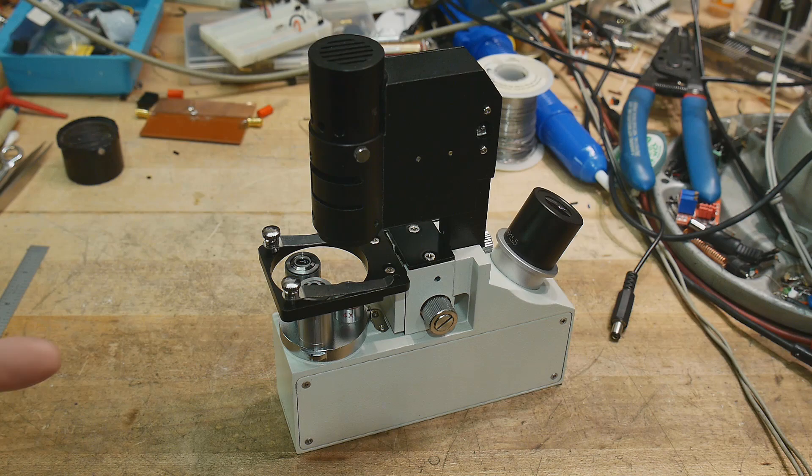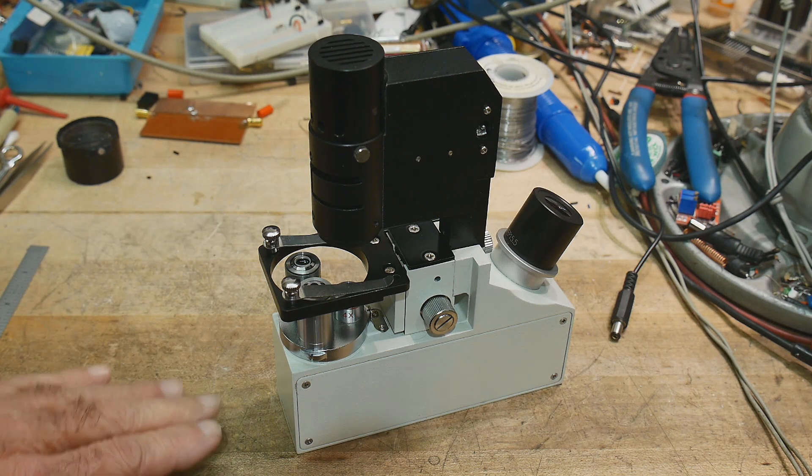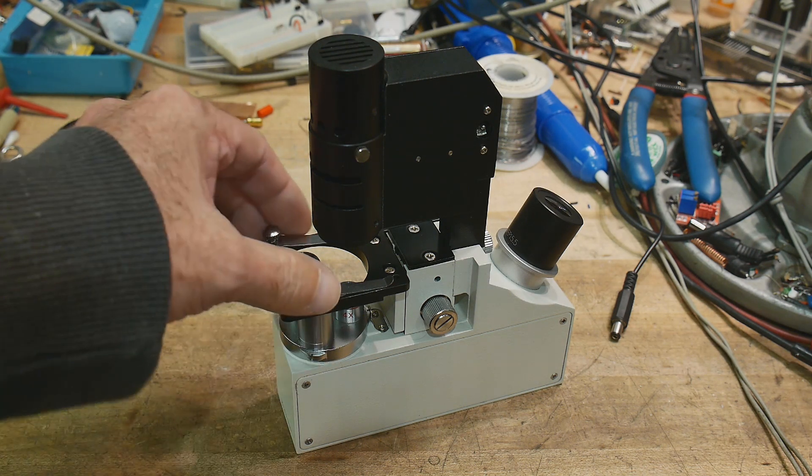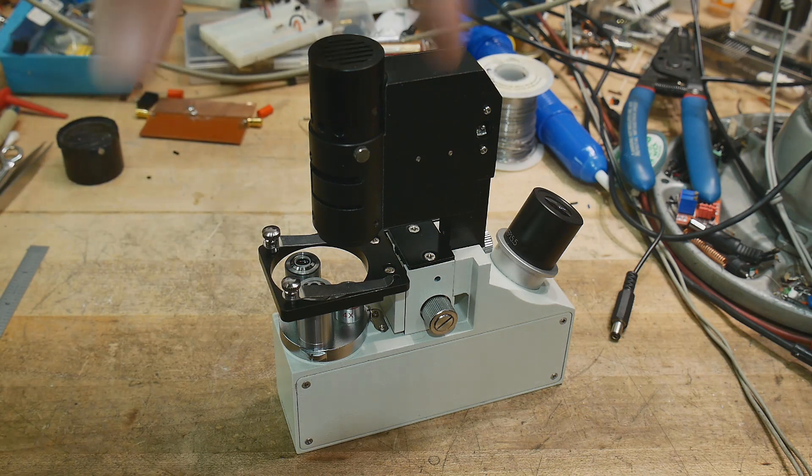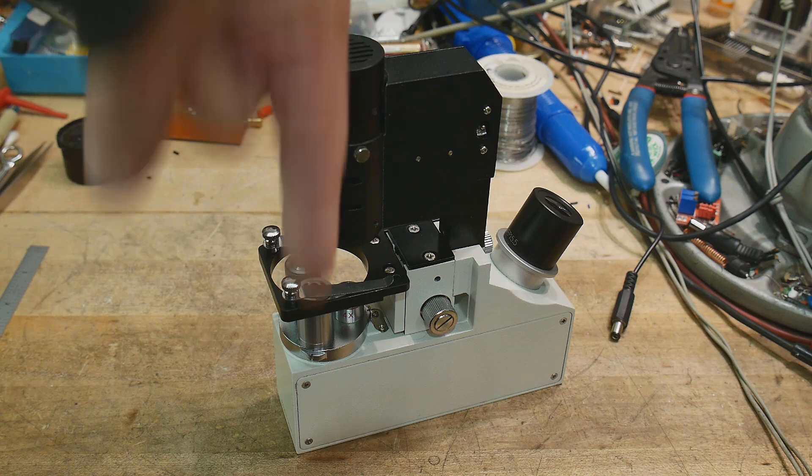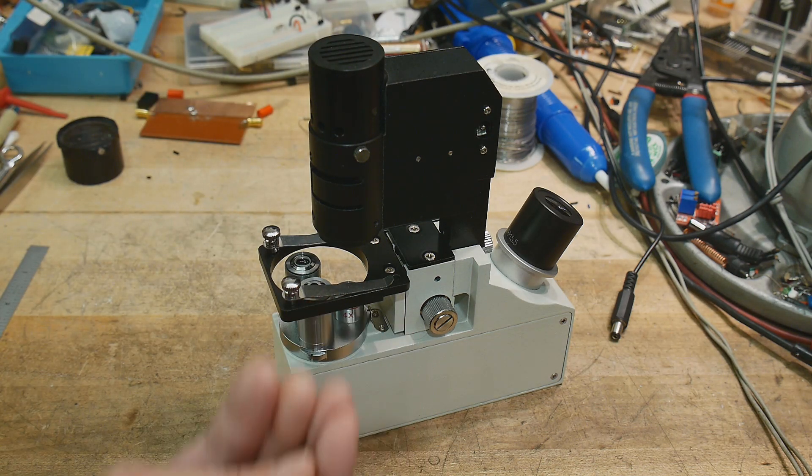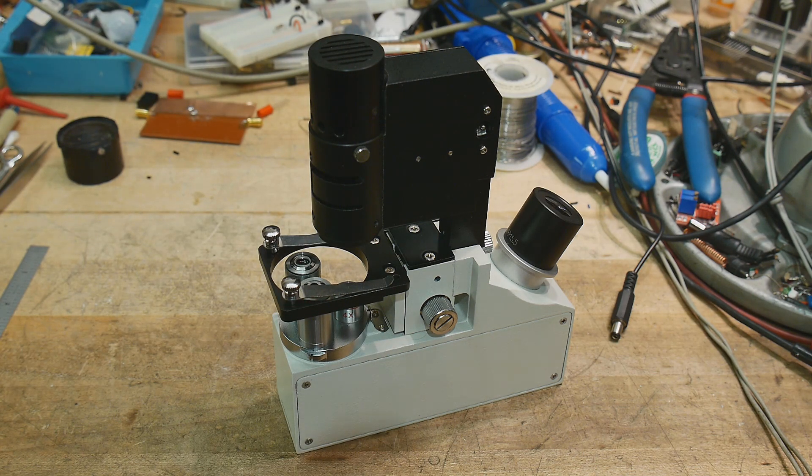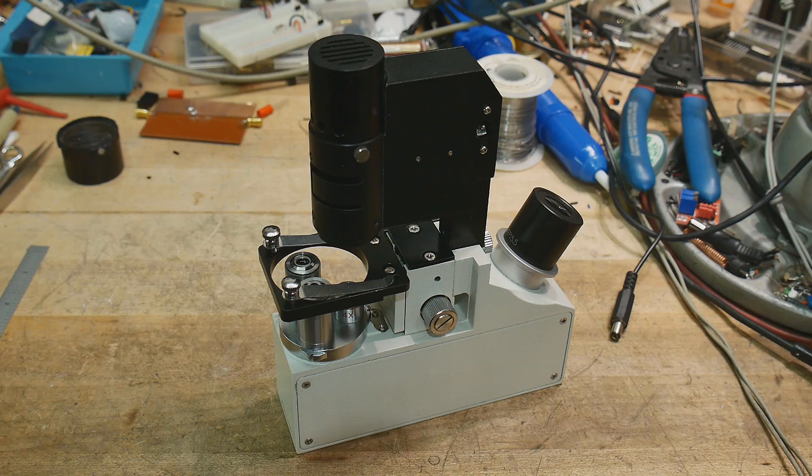Almost all microscopes that you've seen, biological microscopes, the work surface is set up like this and then the microscope's on top. There's an eyepiece and an objective and everything looks down, and then the light source comes in from behind.